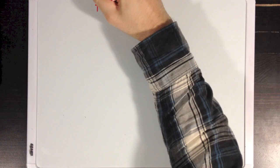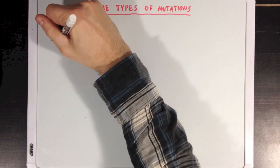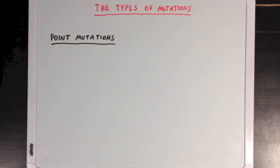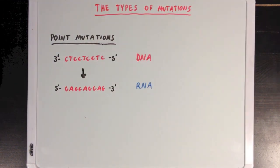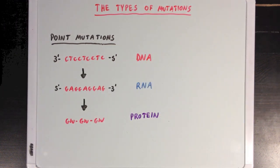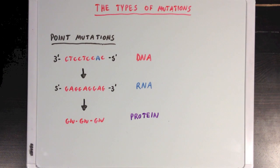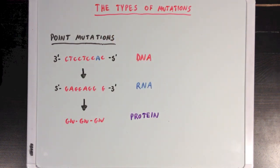So, what are the different types of mutations? The first type we're going to talk about are called point mutations. Here I've written out a random sequence of DNA, which is just a repeating pattern of CTC, which would code for a repeating sequence of GAG in the RNA strand, and finally a protein sequence of three glutamate amino acids. A point mutation is when one of our DNA bases is replaced with another. In this example, a thymine base is being replaced with an adenine base, which leads to a change in one RNA nucleotide and ultimately a change in one amino acid.